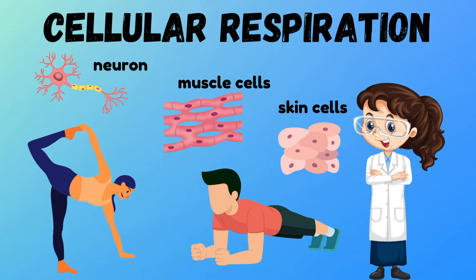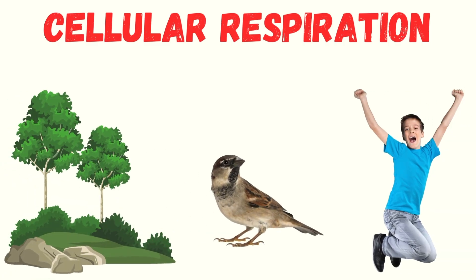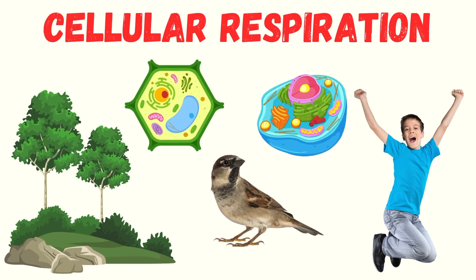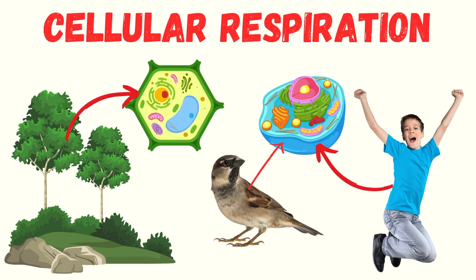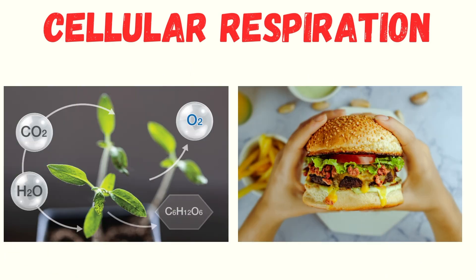What exactly is cellular respiration? Well, it's the process that all living things — from plants to animals to you — use to get energy from food. It happens in every single cell, whether it's a plant cell or an animal cell. Basically, cellular respiration is how we turn the food we eat, or in the case of plants, the food they make during photosynthesis, into energy that cells can actually use.